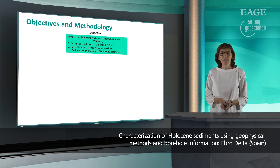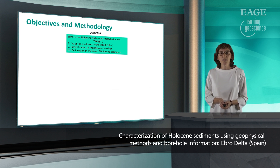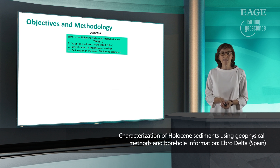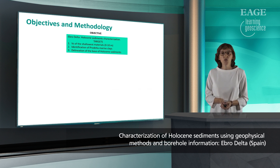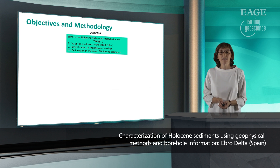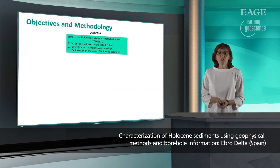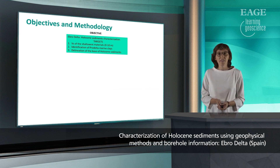In the Holocene sediments characterization, our targets will be: surficial sediment parameters focused on VS estimation of the first 10 meters depth; identification of the Pro-Delta marine clays, since they are more prone to compaction than the overlying sediments, and hence delineation of their top and thickness estimation is critical for subsidence characterization; and the third target is to delineate the base of Holocene sediments. Improving knowledge of Holocene sediment thickness is a key parameter for subsidence analysis.